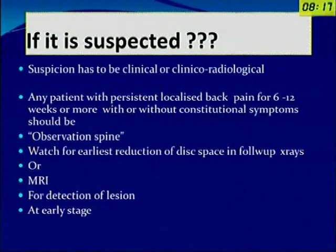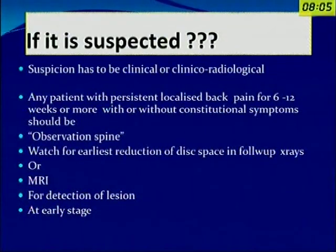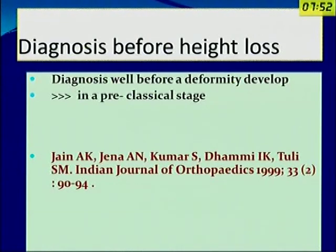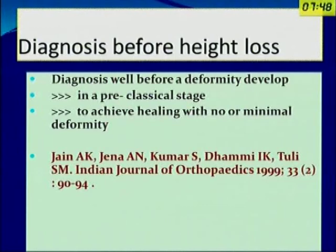Any patient with persistent localized back pain for 6 to 12 weeks or more, with or without constitutional symptoms, in an endemic region for tuberculosis should be kept under observation for the spine. One should keep on evaluating clinically and every 6 weeks radiologically for the earliest reduction of disc space on follow-up X-rays, or else they must be taken up for imaging. That is how a diagnosis can be made well before deformity develops, in a pre-classical stage, to achieve healing with no or minimal deformity.